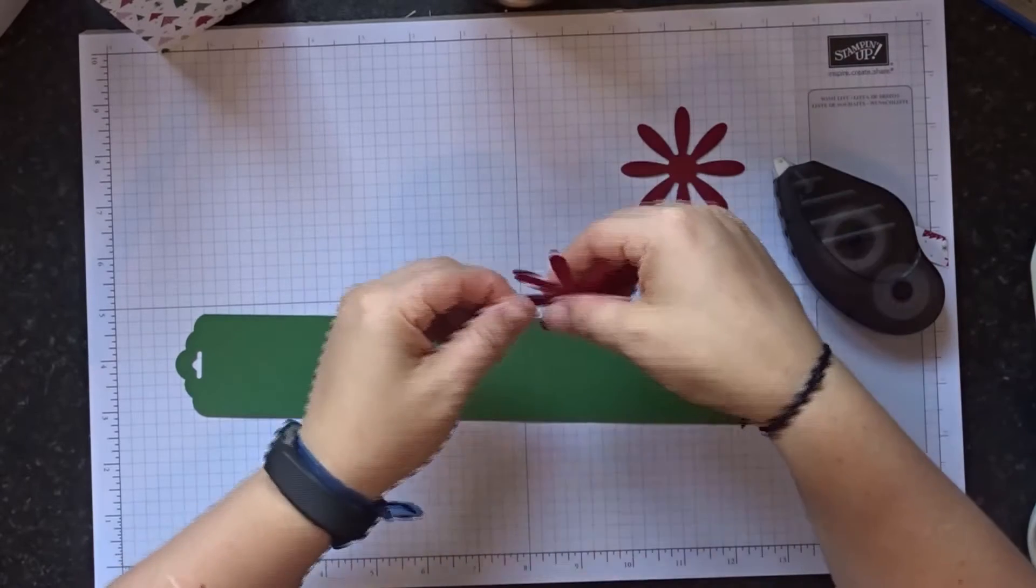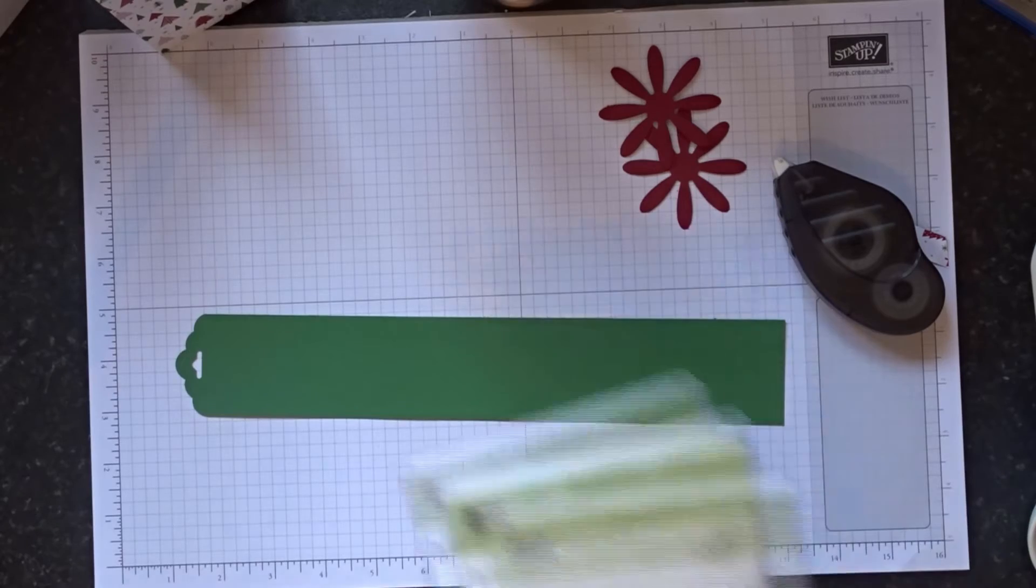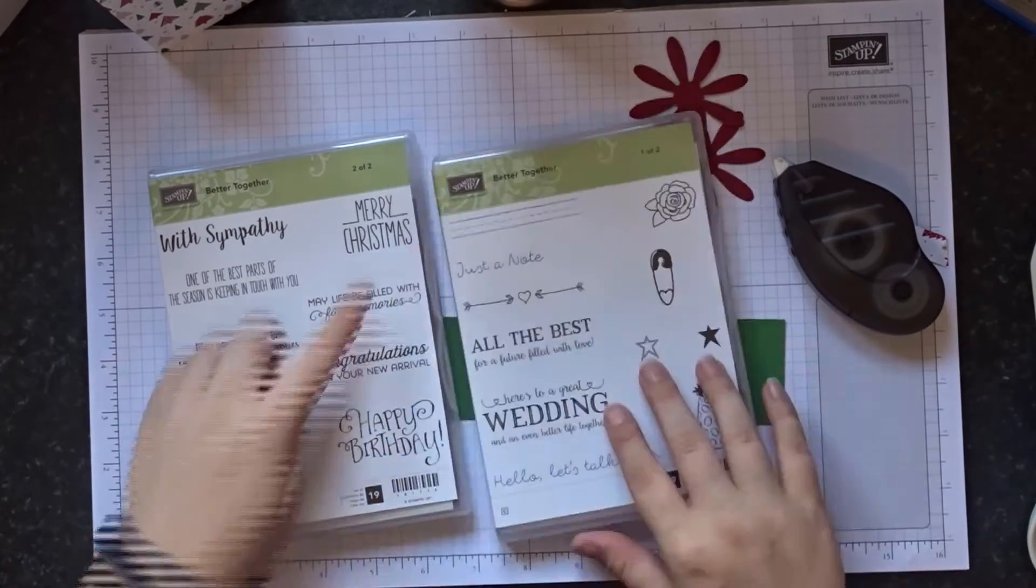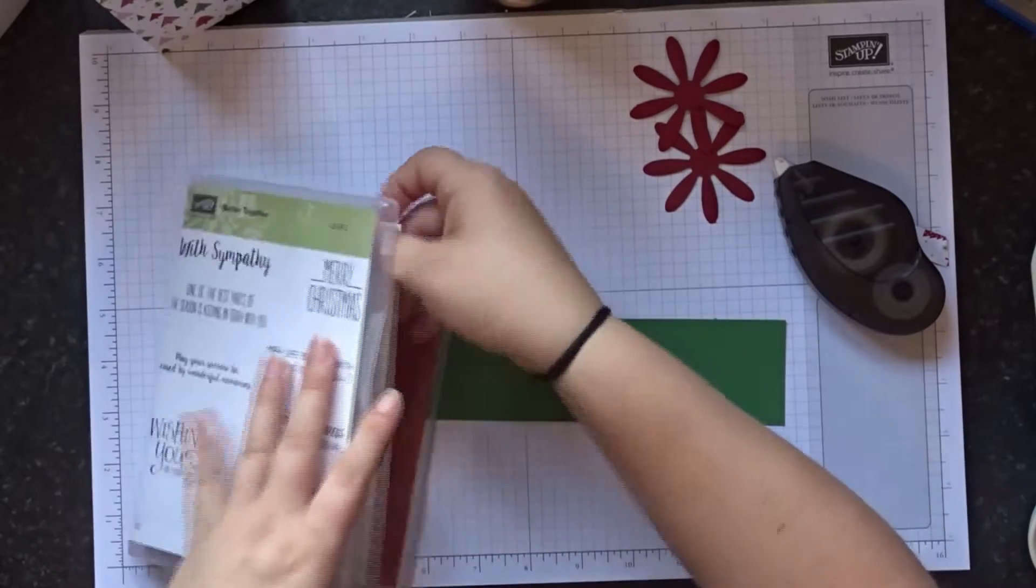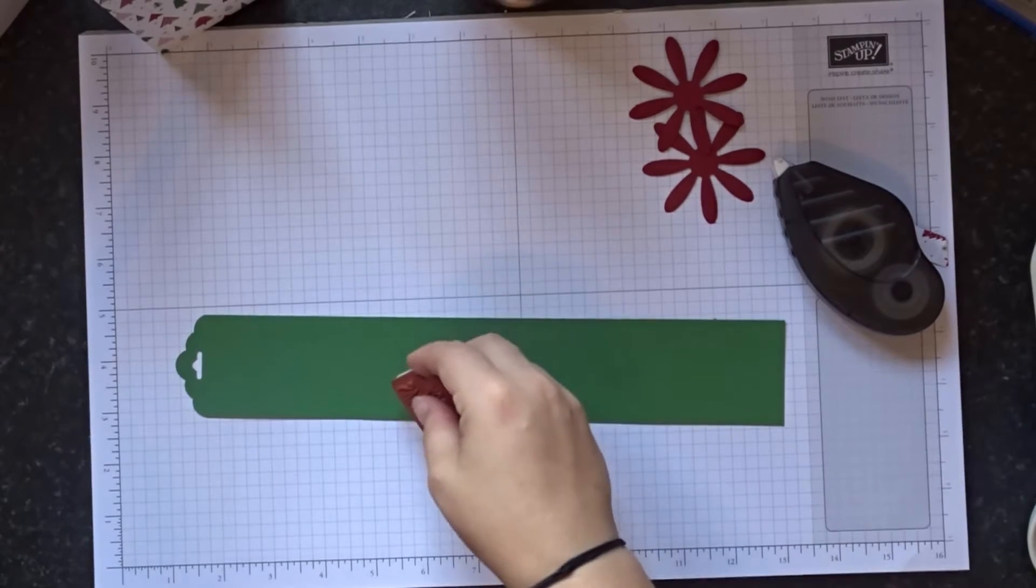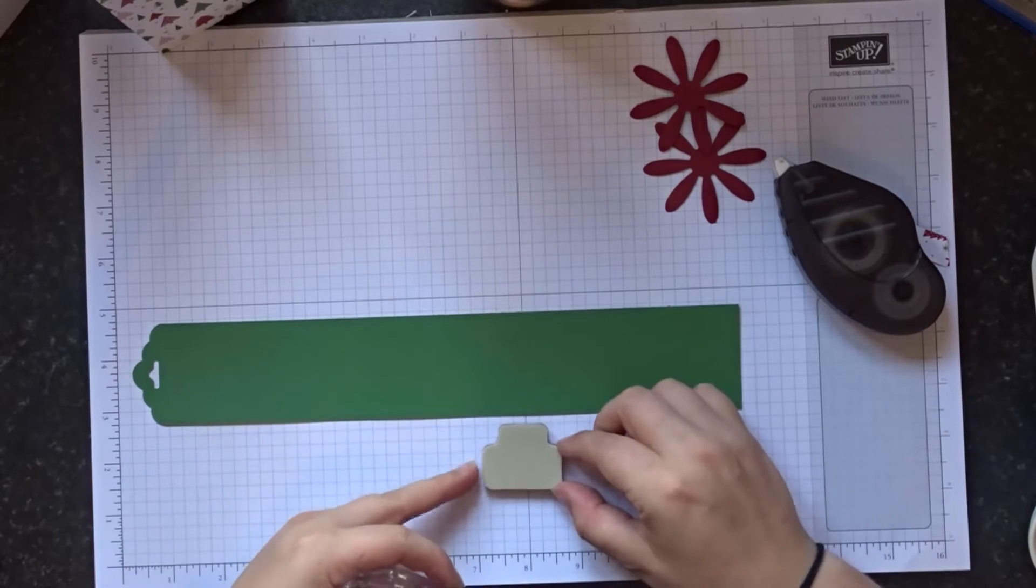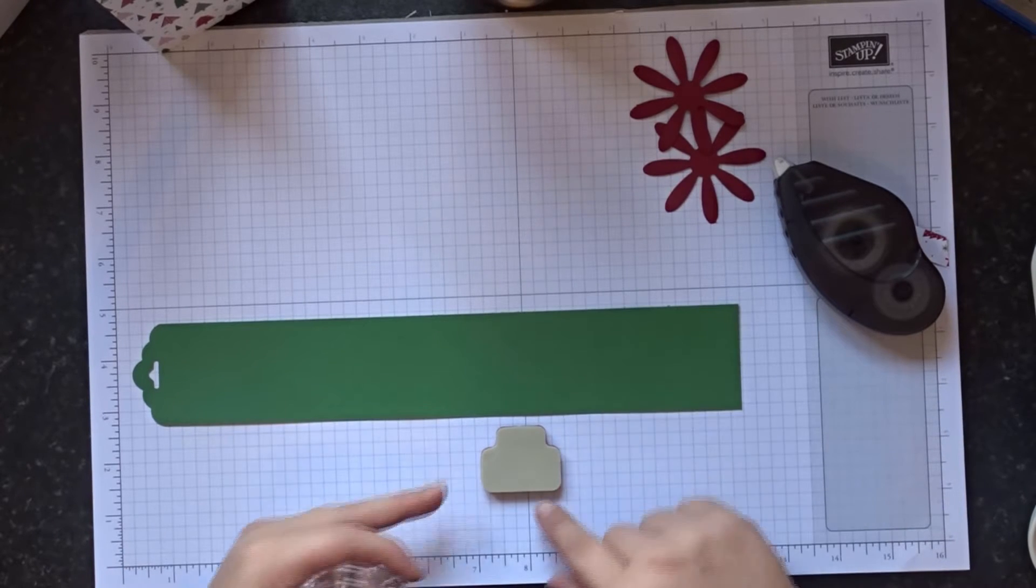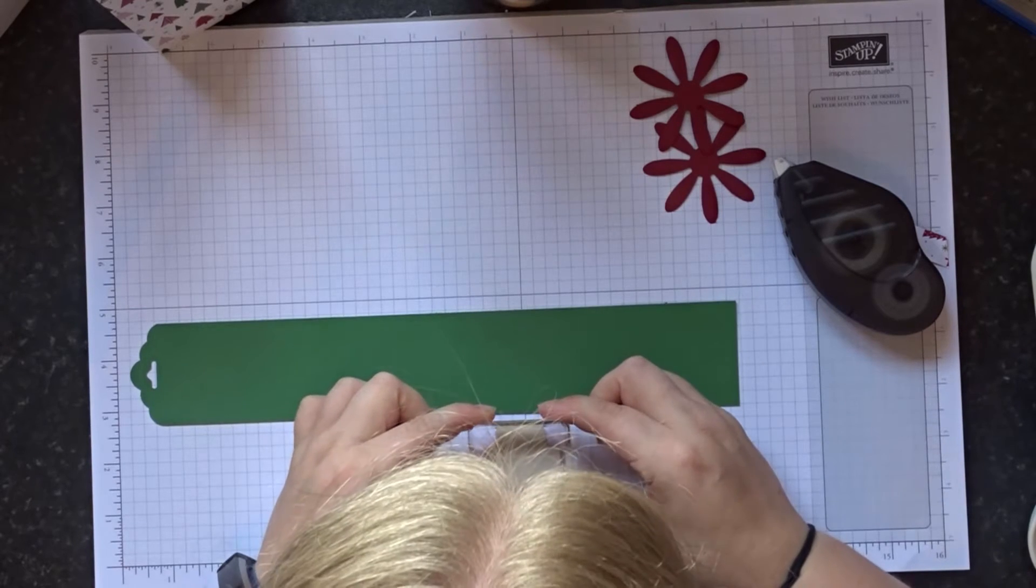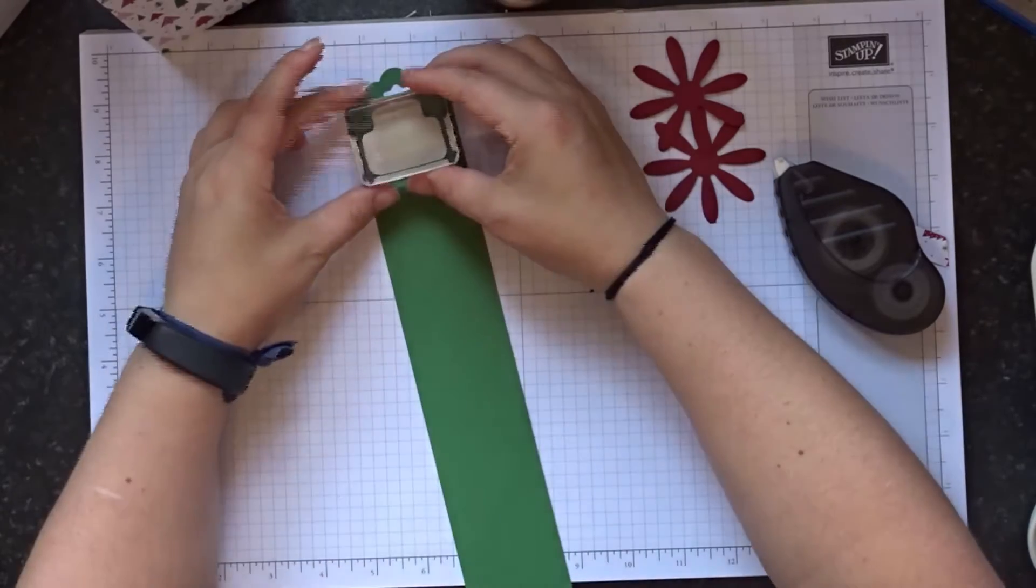So what we're going to do is we are going to do a little bit of stamping, just one item. We're going to be using a sentiment from the Better Together set. We're going to be using the Merry Christmas here. So let's grab that and a little block. This is a B block. I'm just going to line up the stamp on my grid paper here. It's the easiest way to make sure you get it straight.